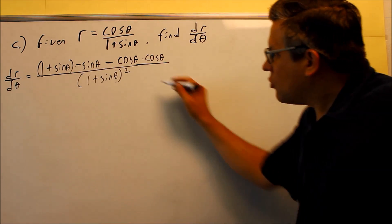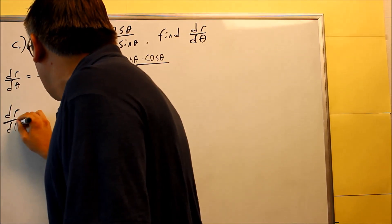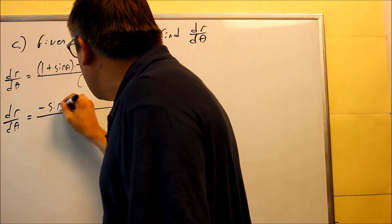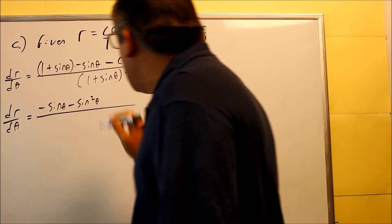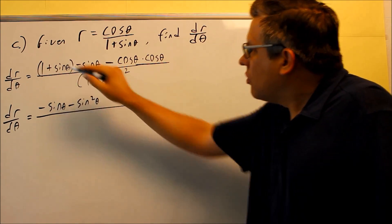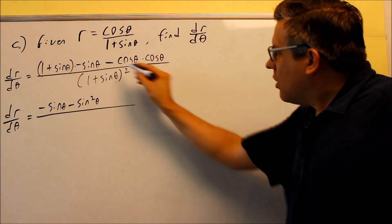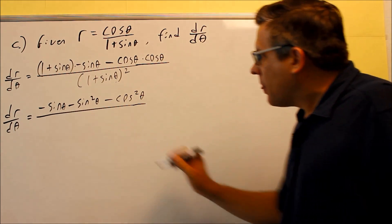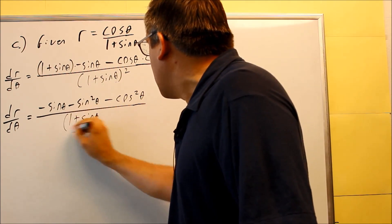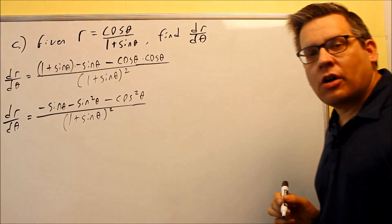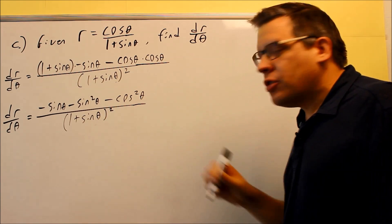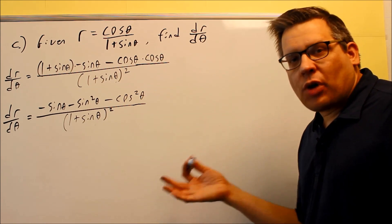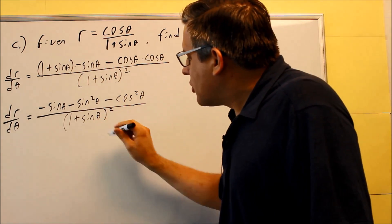Next we're going to simplify and clean this up. We can distribute the negative sine theta into both terms, and we get negative sine theta minus sine squared theta. We also have a negative, and then that term becomes cosine squared. On the bottom, I'm not going to foil it out — I'll keep it in factored form because sometimes you can simplify with something on top, and a few problems that happens. So in this case I'll leave it alone.